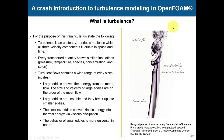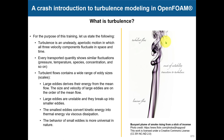Looking at this picture of a buoyant plume, you can see that at the beginning the flow is laminar, then it transitions to turbulent flow. Between laminar and turbulent flow there is also a transition region where you have the onset of instability. You can clearly see the difference between laminar and turbulent flow just by looking at this picture. Importantly, turbulent flows enhance mixing, as you can see here. This transition region is very difficult to solve, and in turbulence modeling we try to avoid modeling the transition to turbulence.